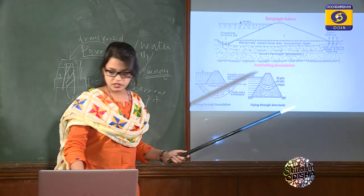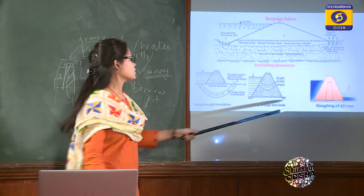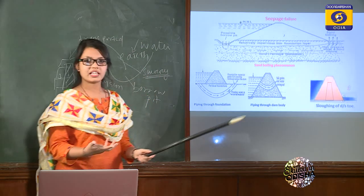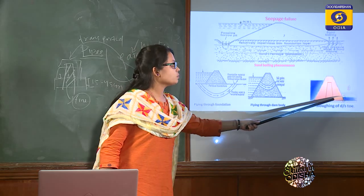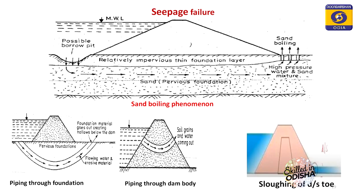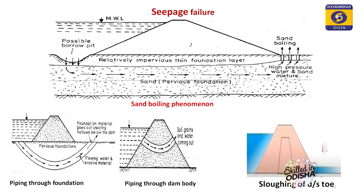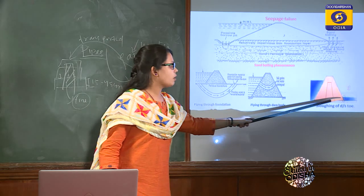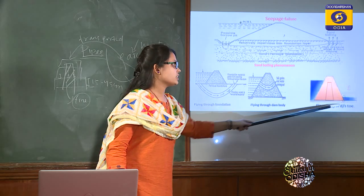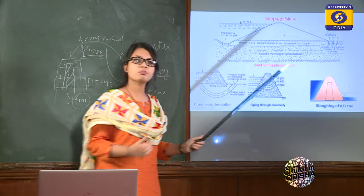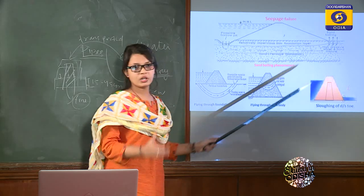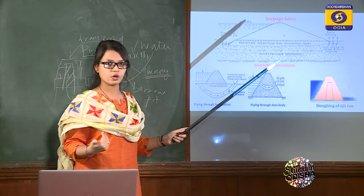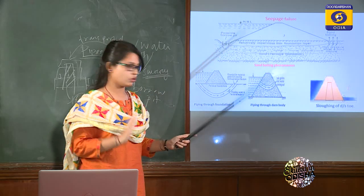Another seepage failure is sloughing of the downstream toe — the removal of soil particles from the downstream toe, which becomes very saturated due to seepage. Providing rock toes allows proper drainage so that only water leaves the body while soil particles are retained.